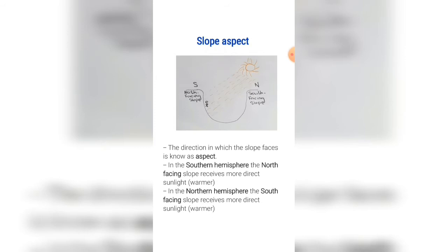Now in the northern hemisphere, the south-facing slope receives more direct sunlight, making it warmer.